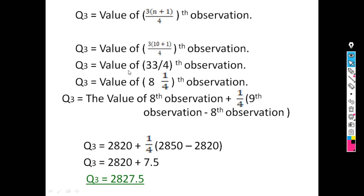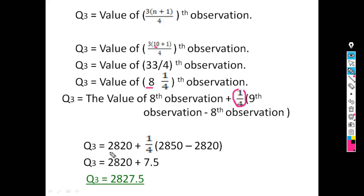For Q3: value of 3×(10+1)/4 = 33/4 = 8¼-th observation. So Q3 = value of 8th observation + (1/4) × (9th observation − 8th observation) = 2820 + (1/4) × (2850 − 2820) = 2820 + 7.5 = 2827.5.